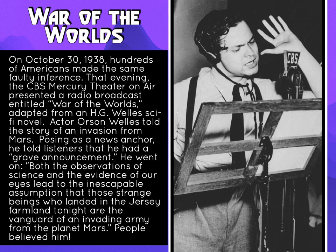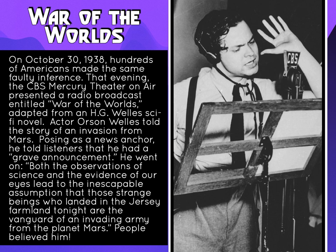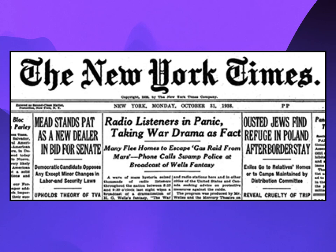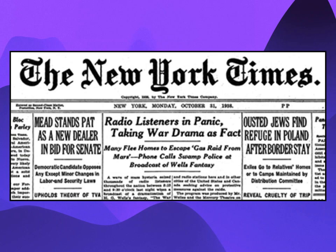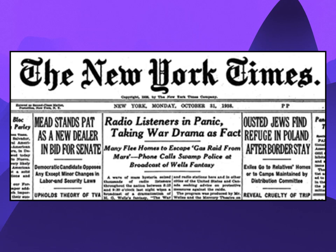Actor Orson Welles told the story of an invasion from Mars, rewritten to sound like a news broadcast — posing as a news anchor. He told listeners he had a grave announcement: 'Both the observations of science and the evidence of our eyes lead to the inescapable assumption that those strange beings who landed in the Jersey farmland tonight are a vanguard of an invading army from the planet Mars.' People actually believed him. Radio listeners in 1938 thought Martians had invaded New Jersey. There was a panic — several hundred people panicked, some were even injured.